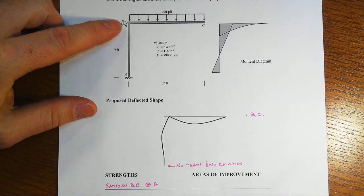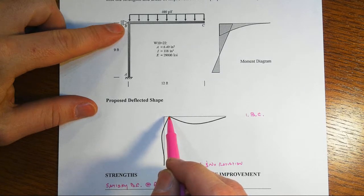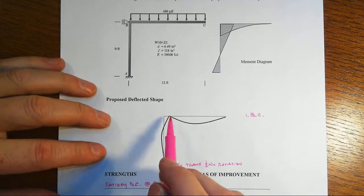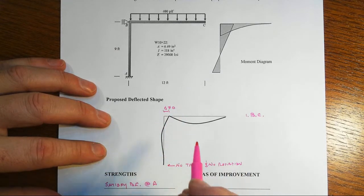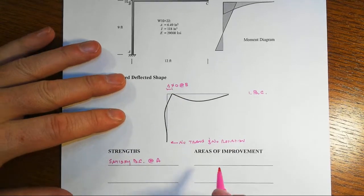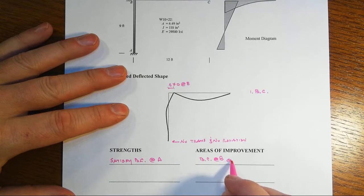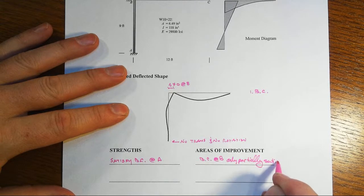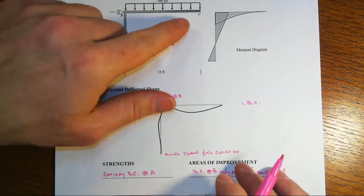At B we're not supposed to have any up or down movement, so joint B does not move up or down, and we're not supposed to have any left right movement. But actually the shape shows that we do have a delta that's not equal to zero in the x direction at B, and that's not good. So that's actually an area of improvement here - that boundary condition at B is only partially satisfied.